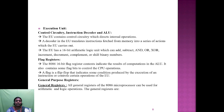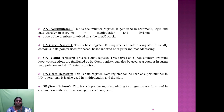All registers of the 8086 microprocessor can be used for arithmetic and logical operations. The general registers are AX, BX, CX, DX, and SP — the stack pointer. AX is the accumulator register, BX is the base register, CX is the count register, DX is the data register, and SP is the stack pointer.